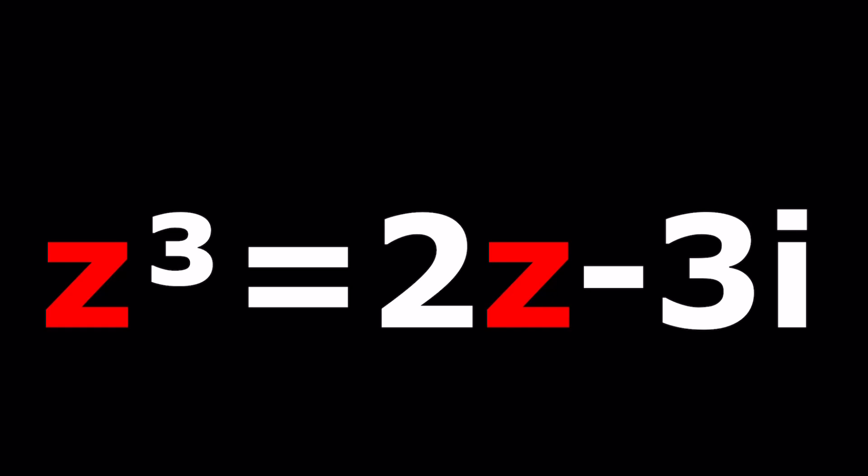I'll be presenting two methods and we're going to be looking at the result from Wolfram Alpha as well. But I phrased the problem a little differently to prompt Wolfram Alpha. We have z cubed equals 2z minus 3i and we're going to be solving for z.